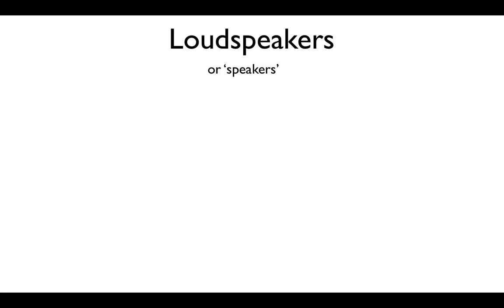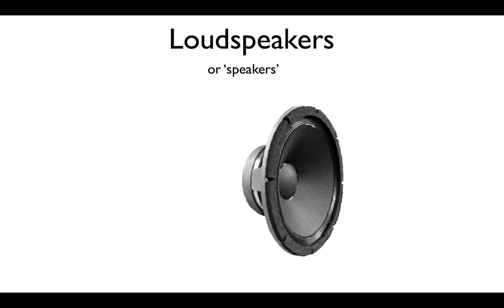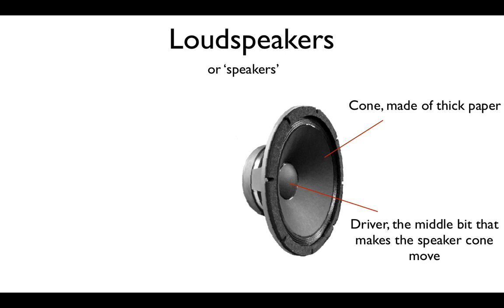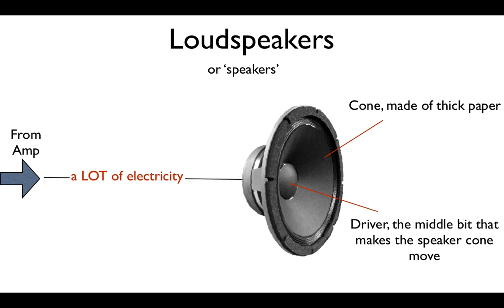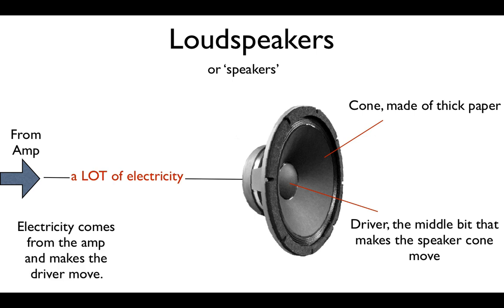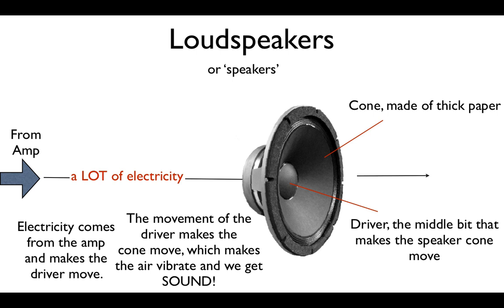The loudspeakers, more commonly referred to as speakers, are where the electricity finally gets turned back into sound that we can hear. Here is what a speaker looks like. It consists of a circular cone which is made of thick paper or cardboard. In the middle of this cone is something called a driver. This is the part of the speaker that moves, causing the cone to vibrate and creating sound waves in the air. Electricity comes from the amp and makes the driver move. The movement of the driver makes the cone move, which makes the air vibrate and we get sound.